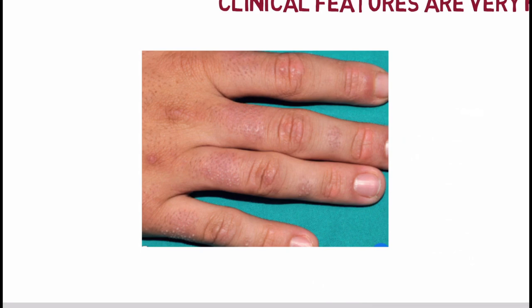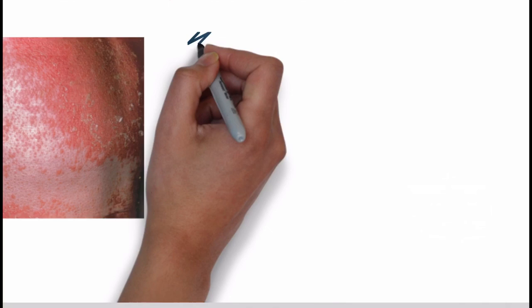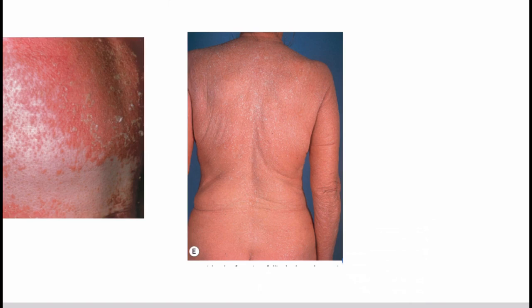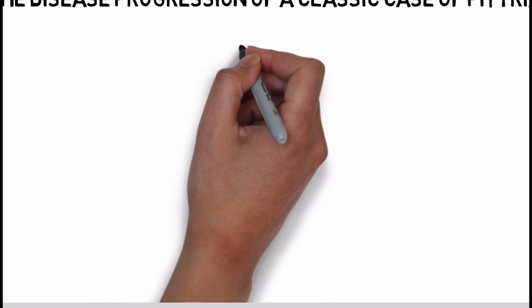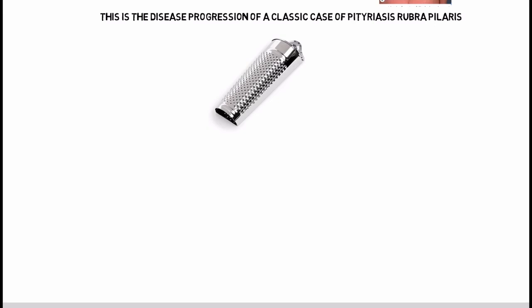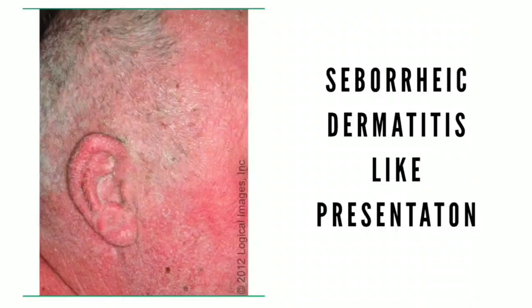Follicular hyperkeratinization on an erythematous base is the key finding. These follicular papules coalesce to form salmon-colored to orange-red plaques with islands of sparing. When these plaques extend, this results in erythroderma with varying degrees of scaling. The follicular hyperkeratotic papules occur on the dorsal surface of the proximal fingers, giving rise to a nutmeg grater appearance. These papules can also be seen on the trunk and extremities. Palms and soles are commonly involved with distinctive orange-red waxy keratoderma.